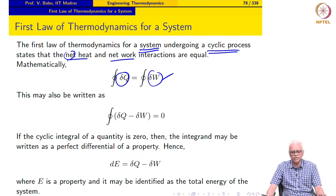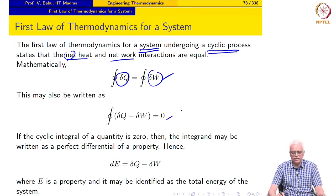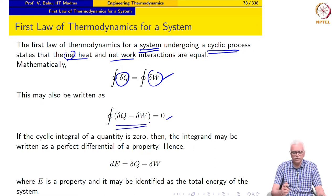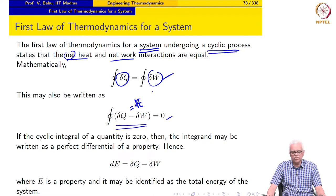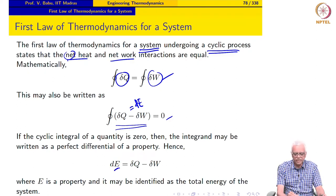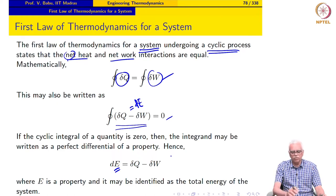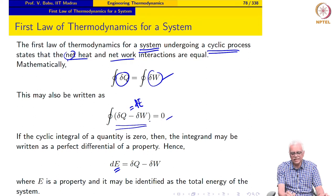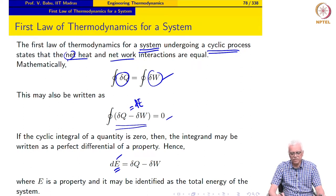We can rewrite this expression as: cyclic integral of (delta Q minus delta W) equals 0. From mathematics, if the cyclic integral of a quantity is 0, then we may write the integrand as the perfect differential of a quantity. We choose to write this as dE, and we identify E as the total energy of the system — it is a property.